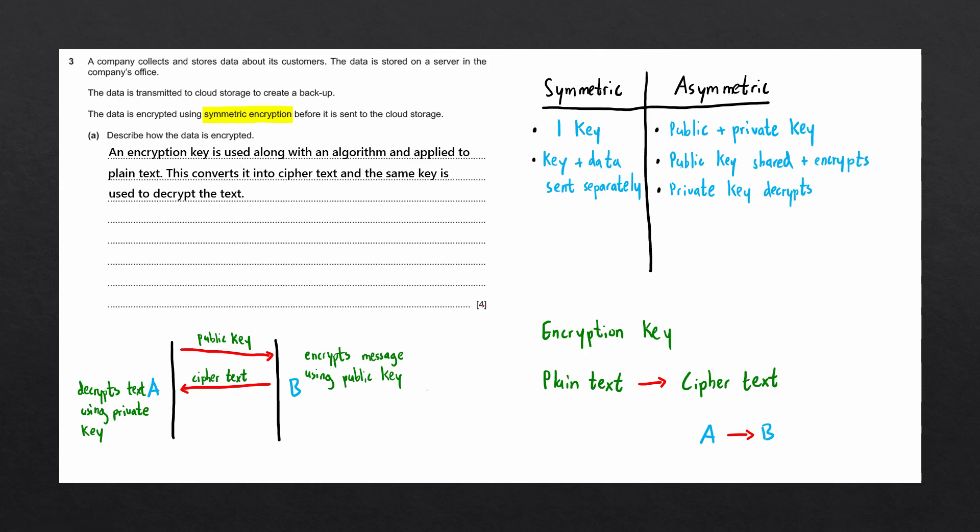Let's see if we've mentioned four points. The first point is that an encryption key is used. The second point is that it is used alongside an algorithm. The third point is that it is applied to plain text. The fourth point is that it converts it into ciphertext. And we even added a fifth point that the same key is used to decrypt the text. So you can see we have a five mark answer here, which is completely fine as it covers all of our points.